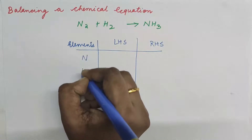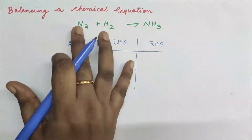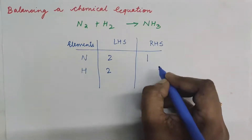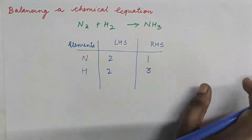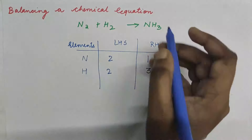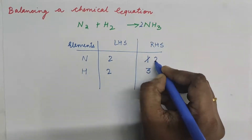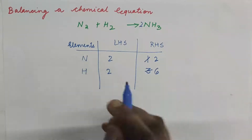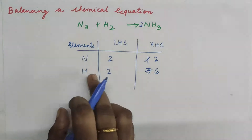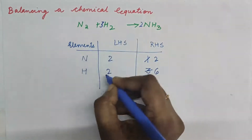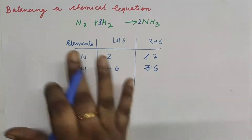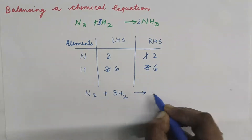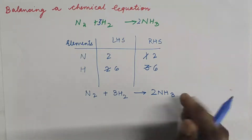The total elements in this reaction are nitrogen and hydrogen. On the left-hand side we have two nitrogen and two hydrogen; on the right-hand side we have one nitrogen and three hydrogen — so it is not balanced. If I put a two in front of ammonia, the nitrogen becomes two and the hydrogen becomes two times three, which is six. To make the left-hand side hydrogen also six, I put a three in front of H₂, so three times two equals six. The balanced equation is: N₂ plus 3H₂ forms 2NH₃.